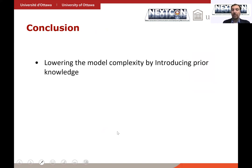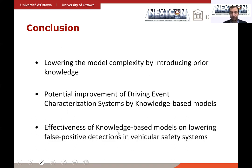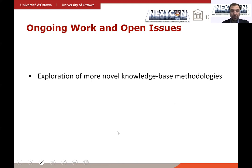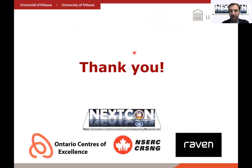To conclude, including the prior knowledge input model allows us to reduce our model's complexity and achieve better prediction results — improved accuracies, improved F1 scores combining precision and recall, and lower false predictions. This can improve vehicular safety systems. There are ongoing work and open issues: several other knowledge-based methodologies are currently being integrated into this model, and it's important to test under other datasets to see how this generalizes. Thank you very much; do not hesitate to reach us if you have any questions.